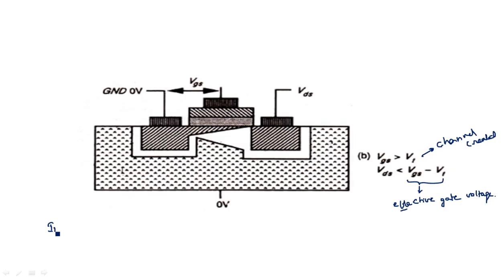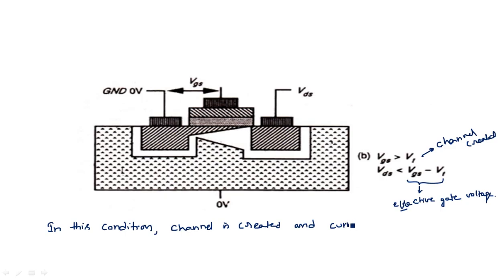In this condition, the channel is created and current also flows, so the current is moving from drain to source.